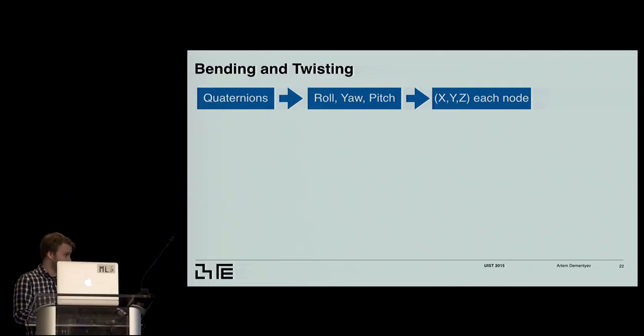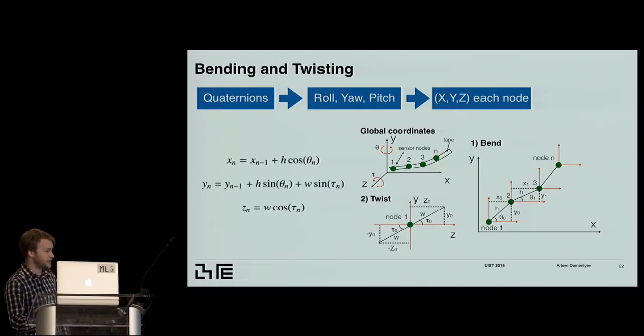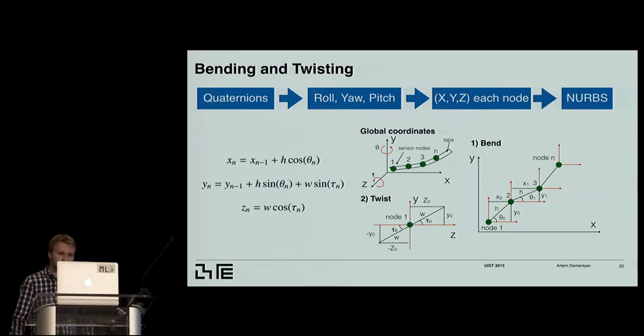And then we have those angles. We get the X, Y, Z positions for each sensor node. And this is how we do it. We have the bend, basically simple trigonometric functions. The bend comes from the yaw angle. And assuming the fixed distance between the sensor nodes, we can construct the kinematic chain. And the twist is from the pitch angle. And we just look at the pitch angle. And, so here's the equation, just sine and cosine. And from that we can go to the NURBS curves that you saw, where we use the control points to create the surface. So each sensor node would have three control points.